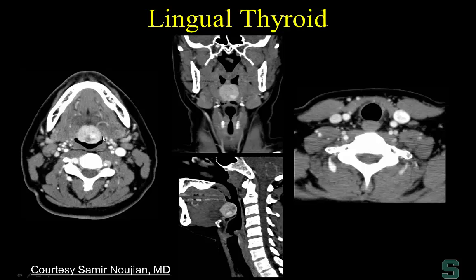Here's an example of a lingual thyroid at the level of the foramen cecum on contrast-enhanced CT — a densely enhancing mass that could be mistaken for a paraganglioma or hypervascular salivary gland tumor. The tip-off is the location right at the foramen cecum, and when you scan down to the thyroid gland level, there is no thyroid tissue present, supporting the diagnosis of lingual thyroid as a solid enhancing lesion rather than a thyroglossal duct cyst.